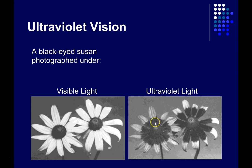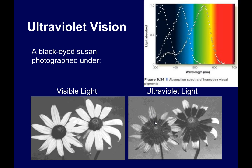We can't see this difference because our photoreceptors aren't sensitive to ultraviolet light. But many insects can, butterflies for instance, or honeybees. This is showing you the sensitivity — the amount of light absorbed — by three different photoreceptor types in honeybees.